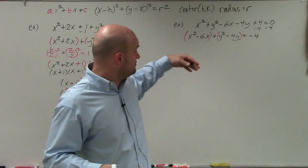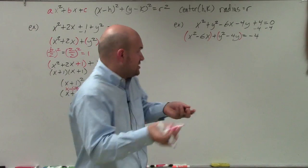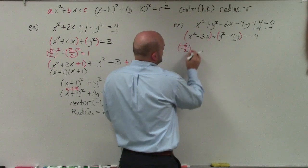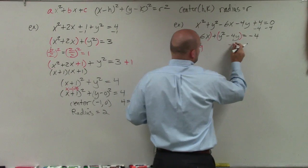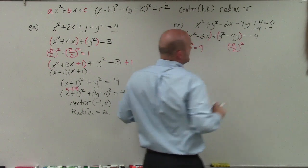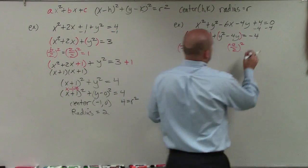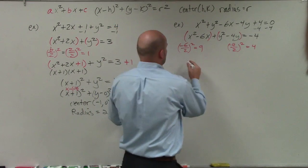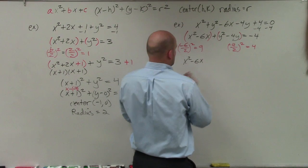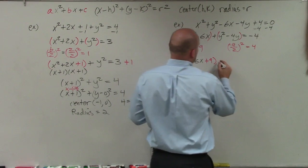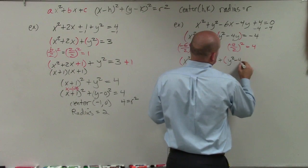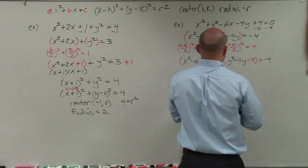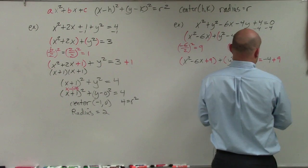I'm going to complete the square for the x's and complete the square for the y's to both produce perfect square trinomials. The b in this example is negative 6, so I take negative 6 divided by 2 and square it. That equals 9. Over here, I'm going to take negative 4 divided by 2 and square it. Negative 4 divided by 2 is negative 2, negative 2 squared is equal to 4. So I'm going to take both those values, add them inside the parentheses, but then also add them to the other side. So I have x squared minus 6x plus 9 plus y squared minus 4y plus 4 equals negative 4 plus 9 plus 4.